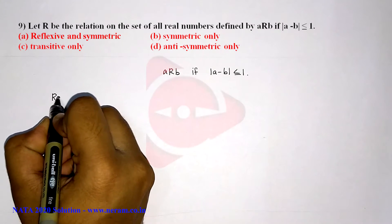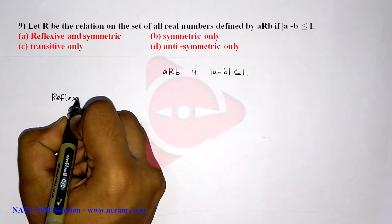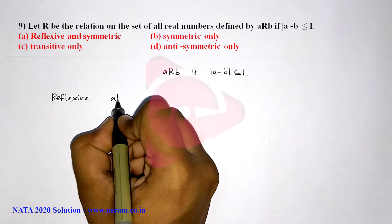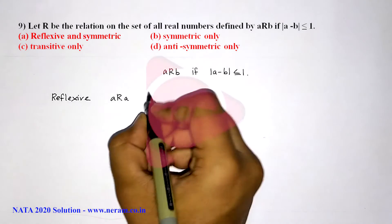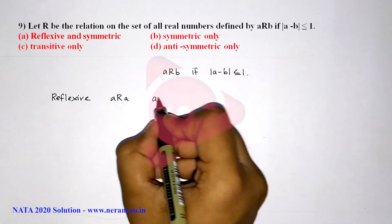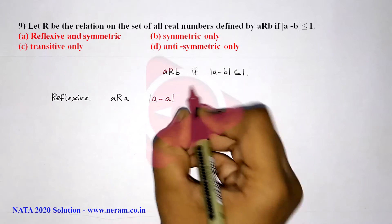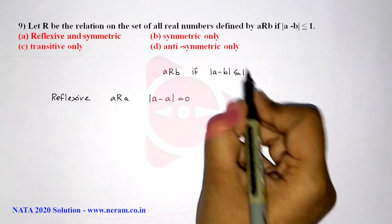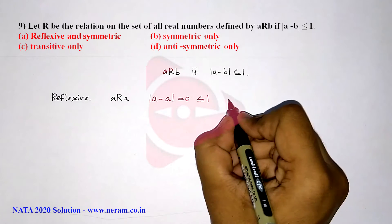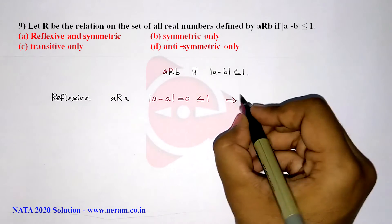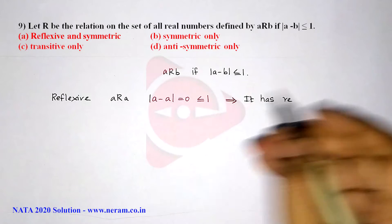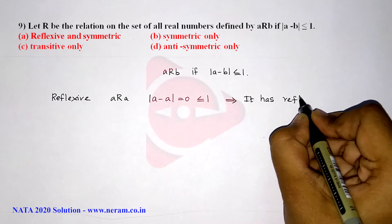First, we verify if the relation is reflexive. Reflexive means aRa. Modulus of a minus a is equal to 0, which is less than or equal to 1. So the given relation is reflexive.